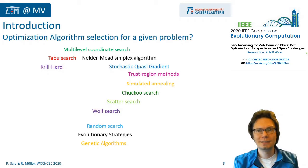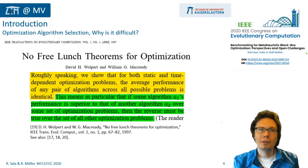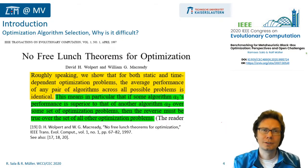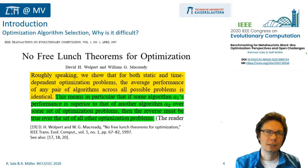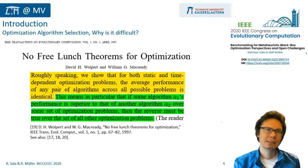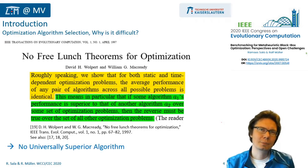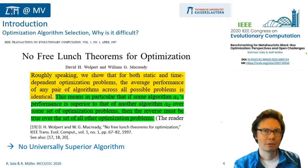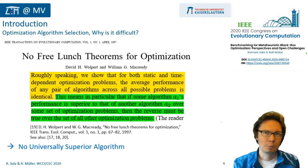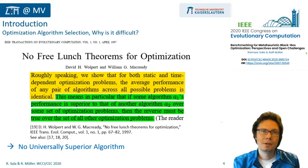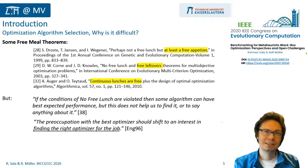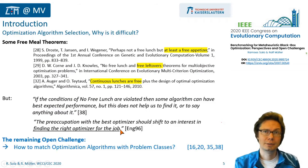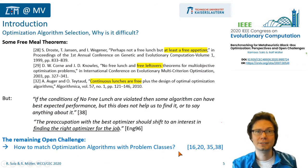Why is it so difficult? First of all, there are some general theoretical results from the no-free-lunch theorems, which basically say that there can't be a universally superior algorithm for all possible sorts of optimization problems. So basically the remaining challenge is to match efficient algorithms with particular problem classes.